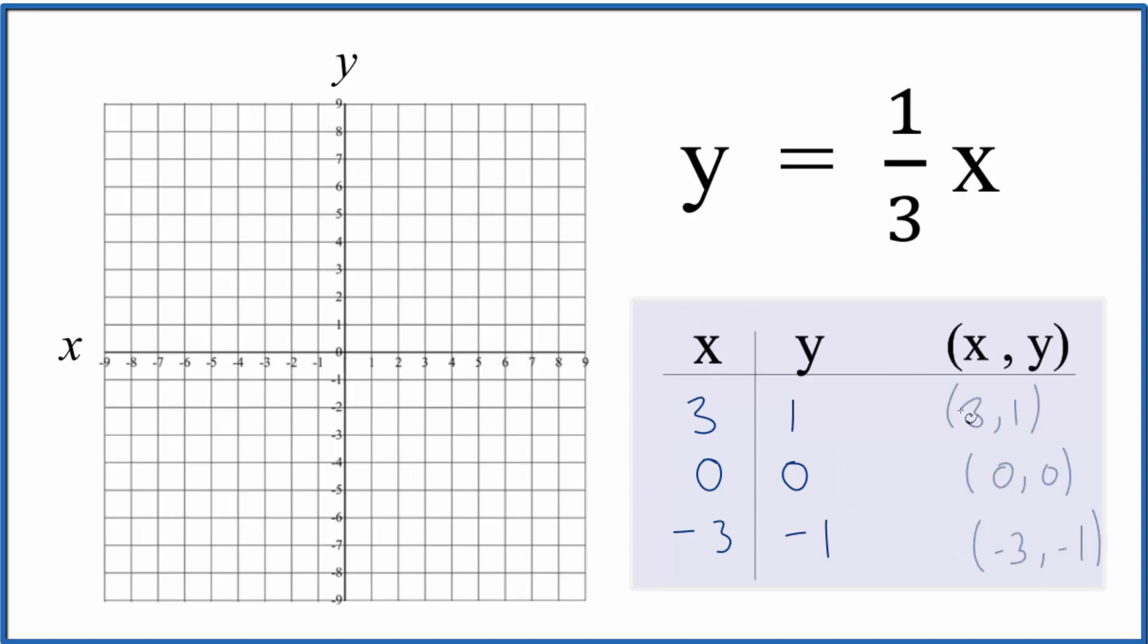These are the points we'll plot for the linear equation y equals one-third x. We start with x is 3 and y is 1. So we go over to x equals 1, 2, 3, and then y is 1, so we go up 1. Next, we have x is 0, y is 0, so right here.